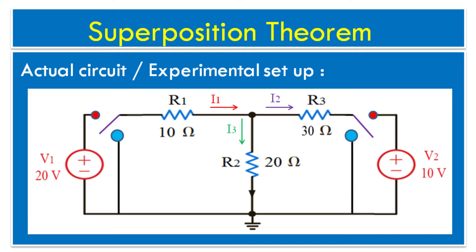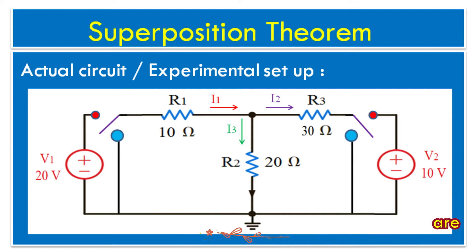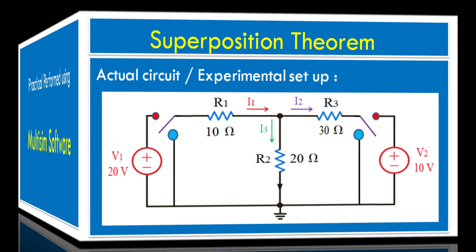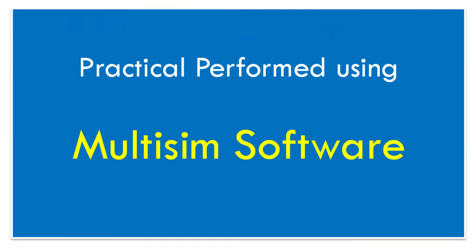In the circuit diagram we have selected three resistors R1, R2, and R3 of 10 ohm, 20 ohm, and 30 ohm respectively, with two single pole double throw (SPDT) switches and two voltage sources V1 and V2.